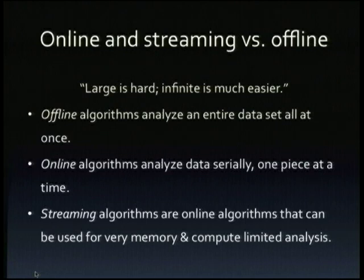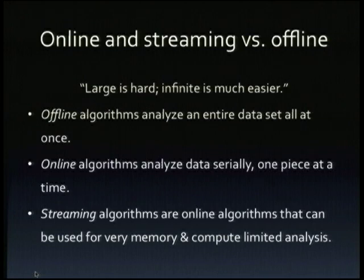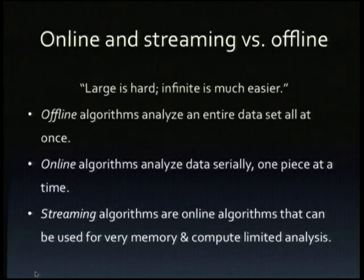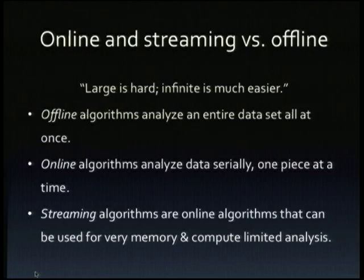The first thing to realize is that large is really hard, but infinite is much easier. As soon as you think about having infinite data, you realize there's no way to do multiple passes. There's no way to do an offline algorithm — one that loads all the data in and then goes over it again. This is very typical of bioinformatics algorithms where we have very large datasets: the program loads the entire dataset in, and then goes over it again to extract information. If the dataset's infinite, that first pass takes a long time. The second pass takes even longer. Offline algorithms analyze a dataset all at once; online algorithms are explicitly built to analyze data as it comes in, serially, one piece at a time.